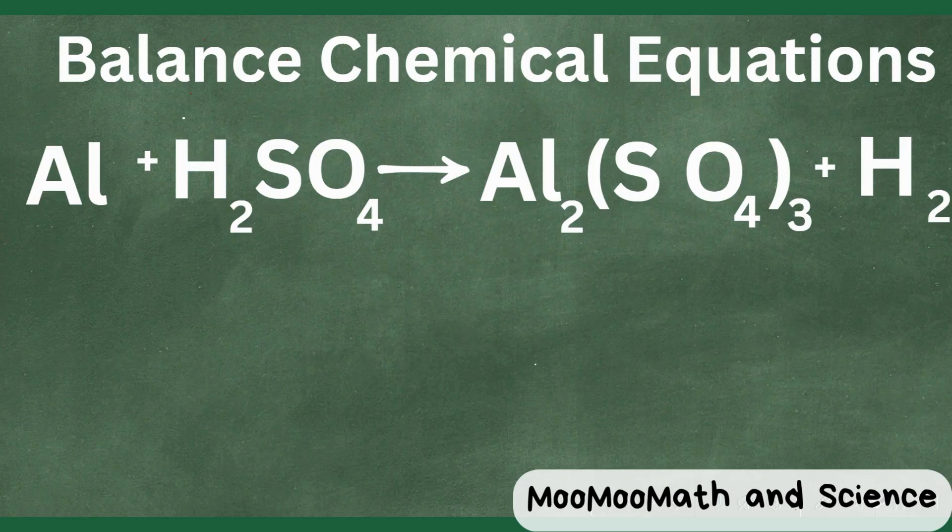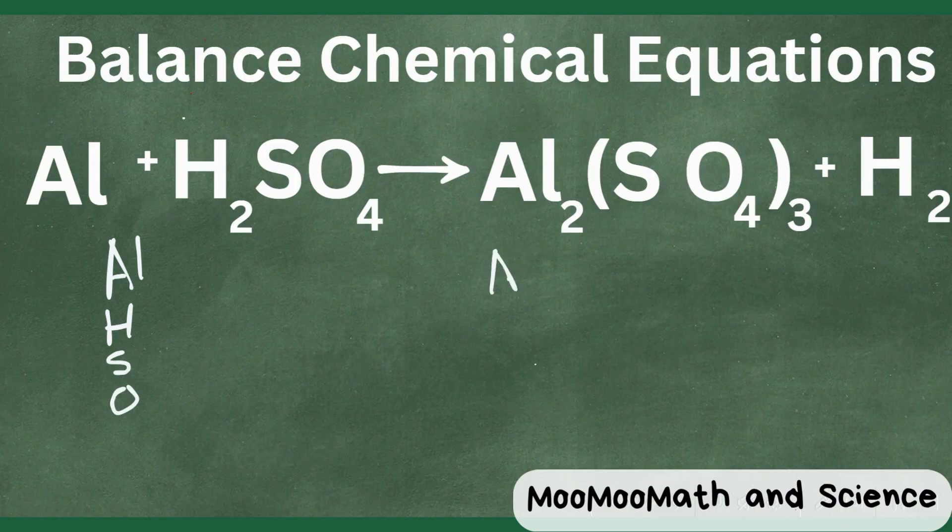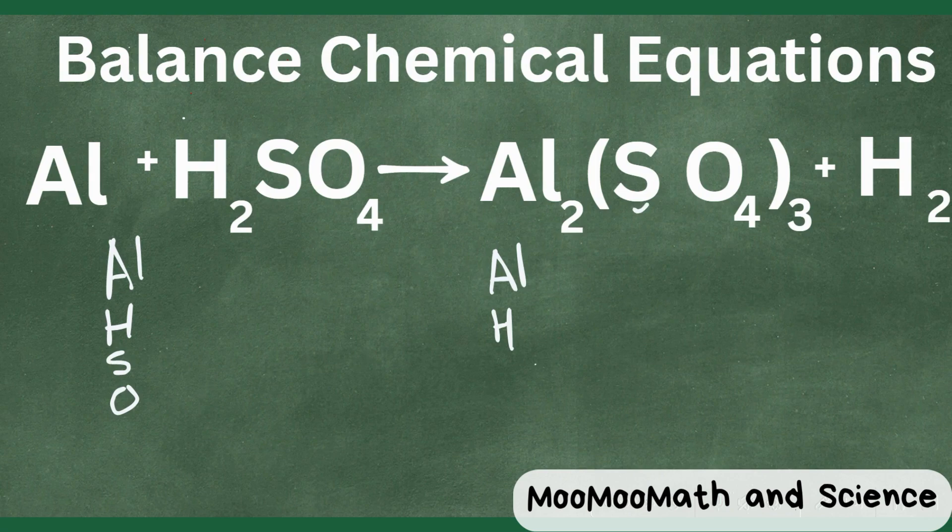So let's get started with counting atoms. We have aluminum, hydrogen, sulfur, and oxygen, and on this side we have aluminum. Now we do have this polyatomic ion which is sulfate but we can still count the elements. Let's put them in the same order. We have hydrogen, then sulfur, and some oxygen.